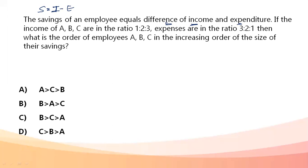If the income of three people A, B, C is in the ratio 1:2:3, and their expenses are in the ratio 3:2:1, then what is the order of employees A, B, C in the increasing order of the size of their savings? We need to find out who saves the most and who saves the least.